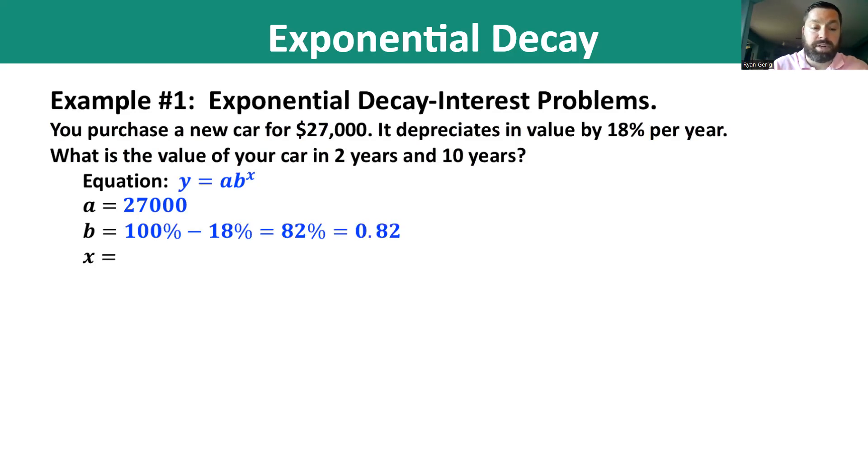The time in the first one is two years. So our equation is y equals 27,000 times 0.82 squared. If you do that in the calculator, you'll get $18,154.80.